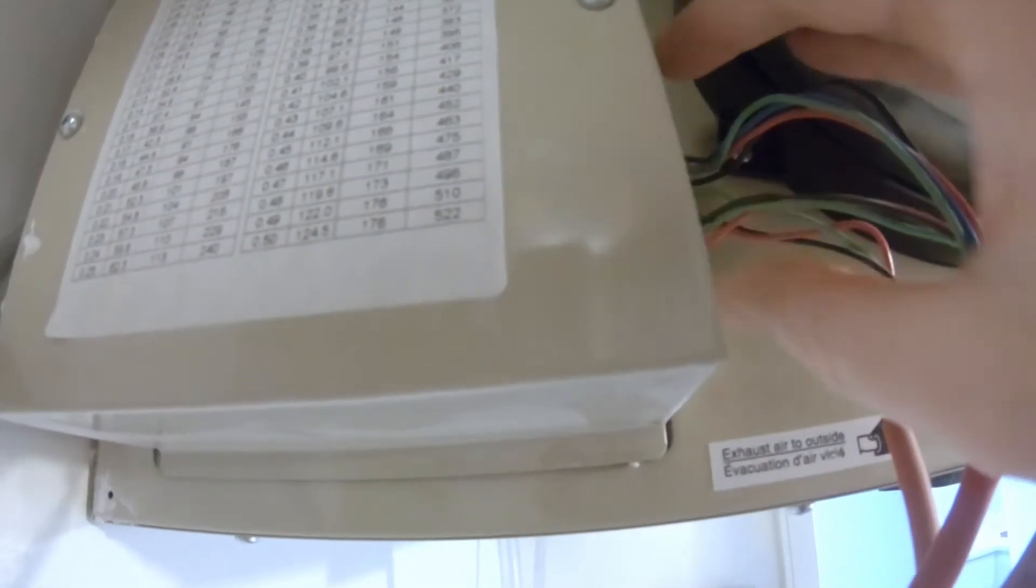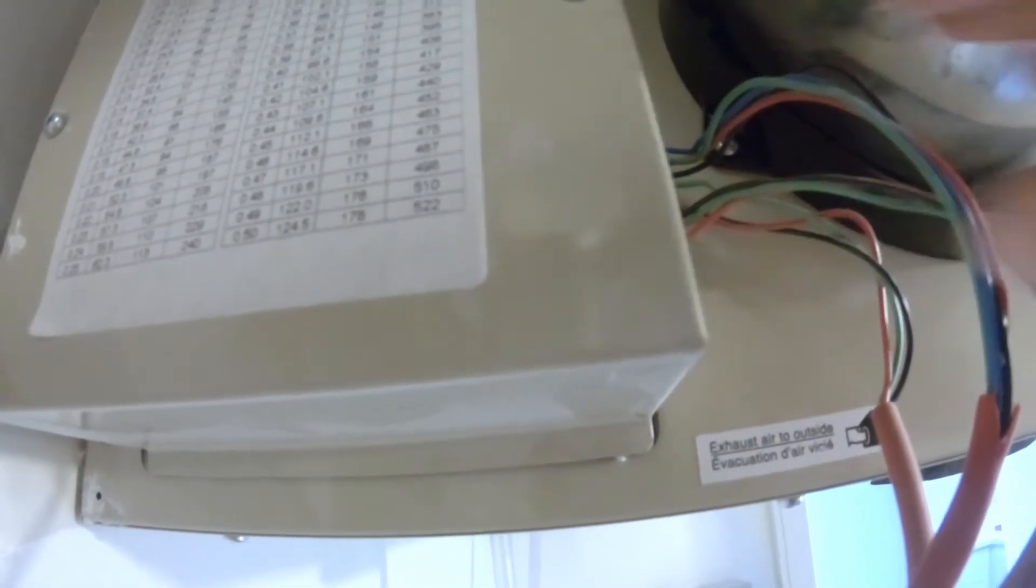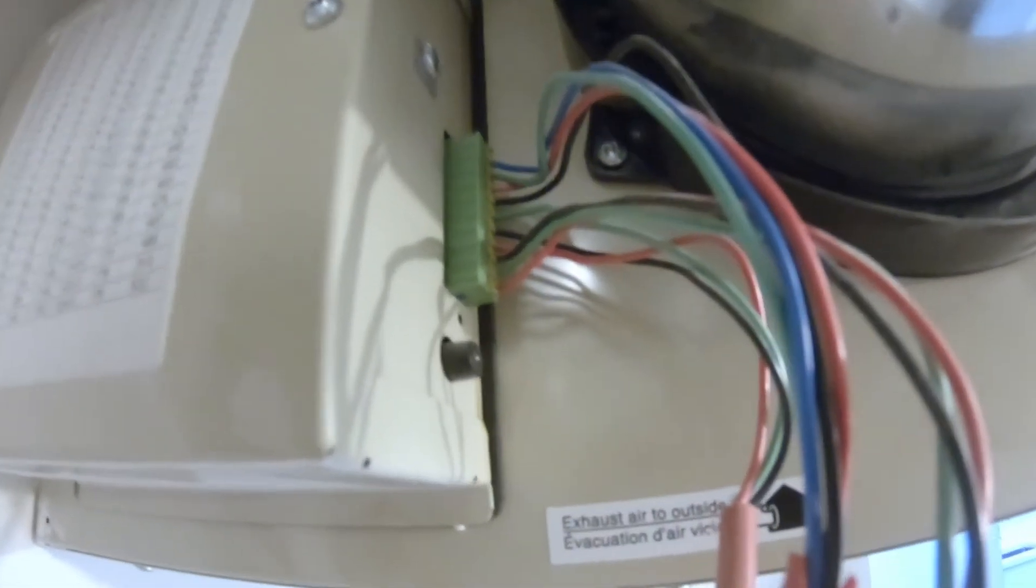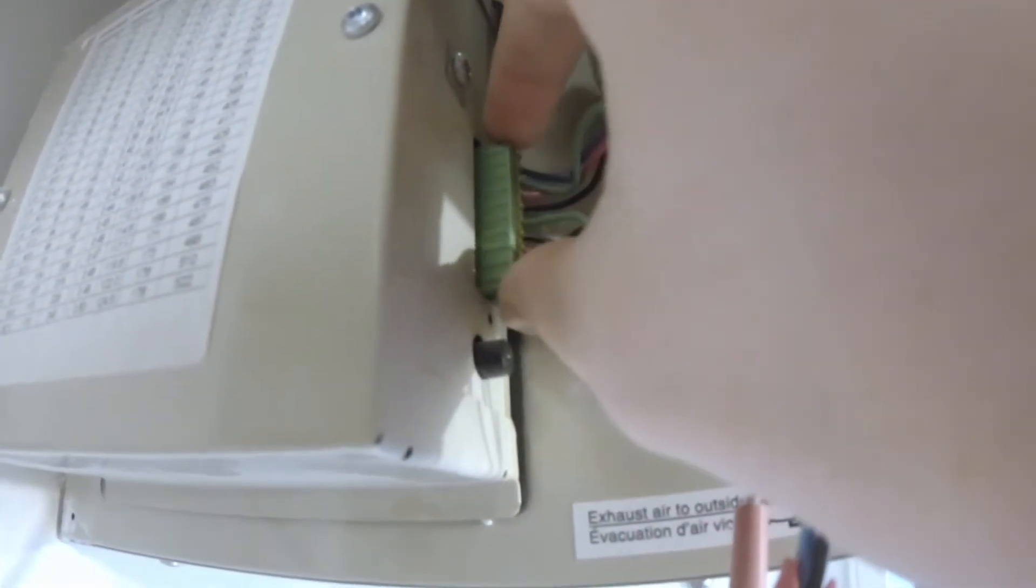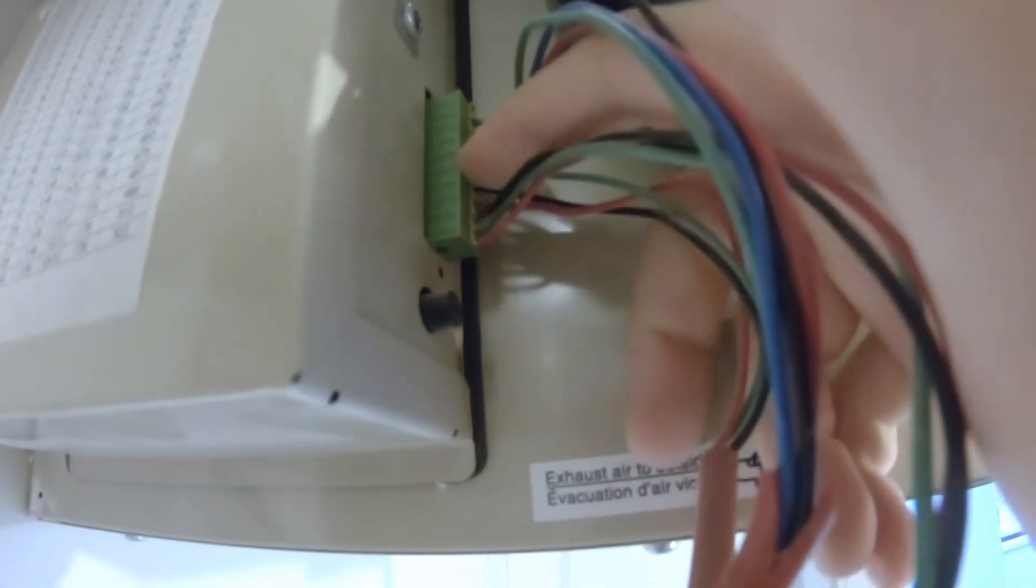So with this connector, it does pull straight out. Just be careful with it because it is attached to electronic circuit board, so this pulls straight out. And then there's these little orange clips. If you push those in a little bit, then those will release the wires and you can pull them out.